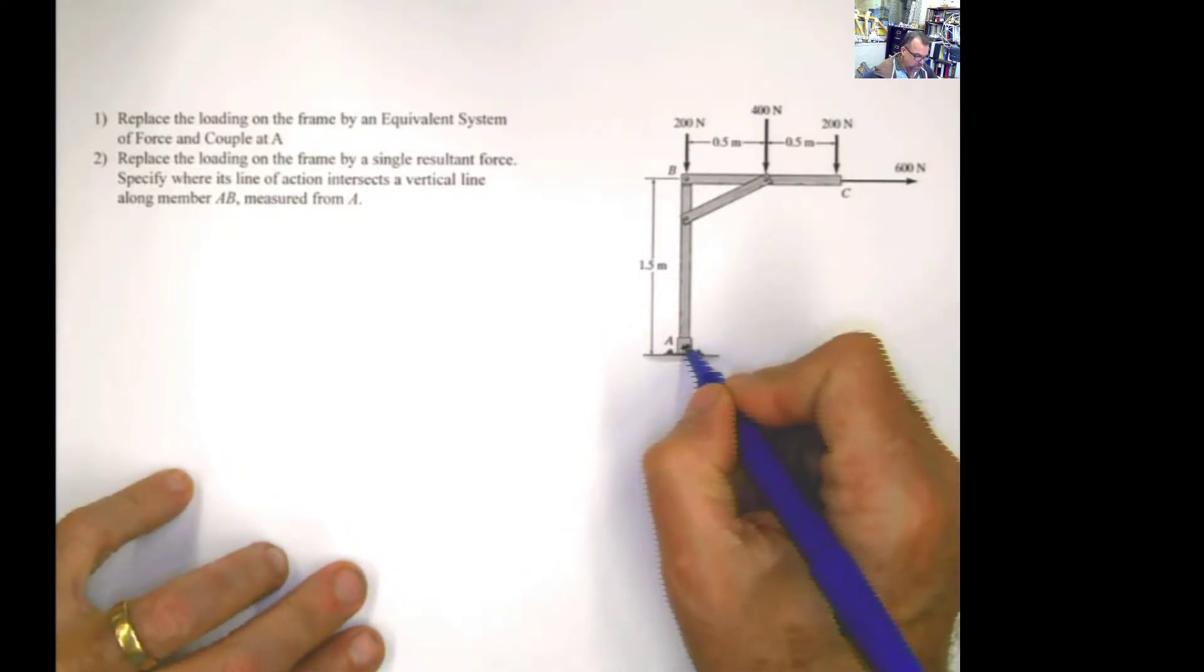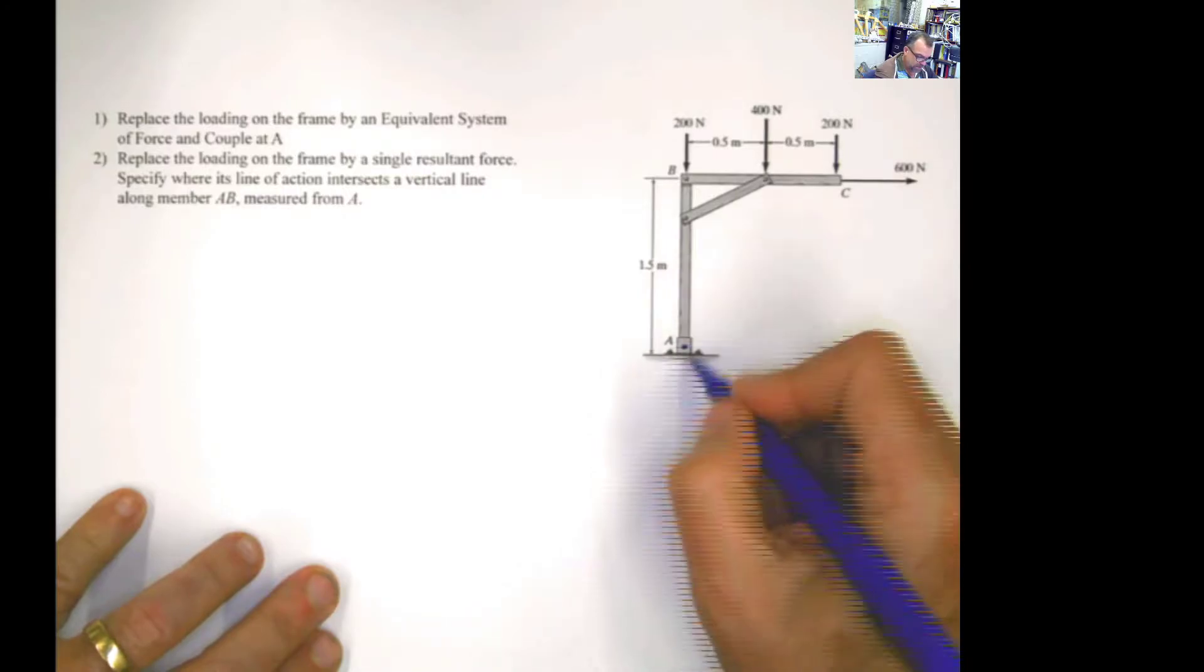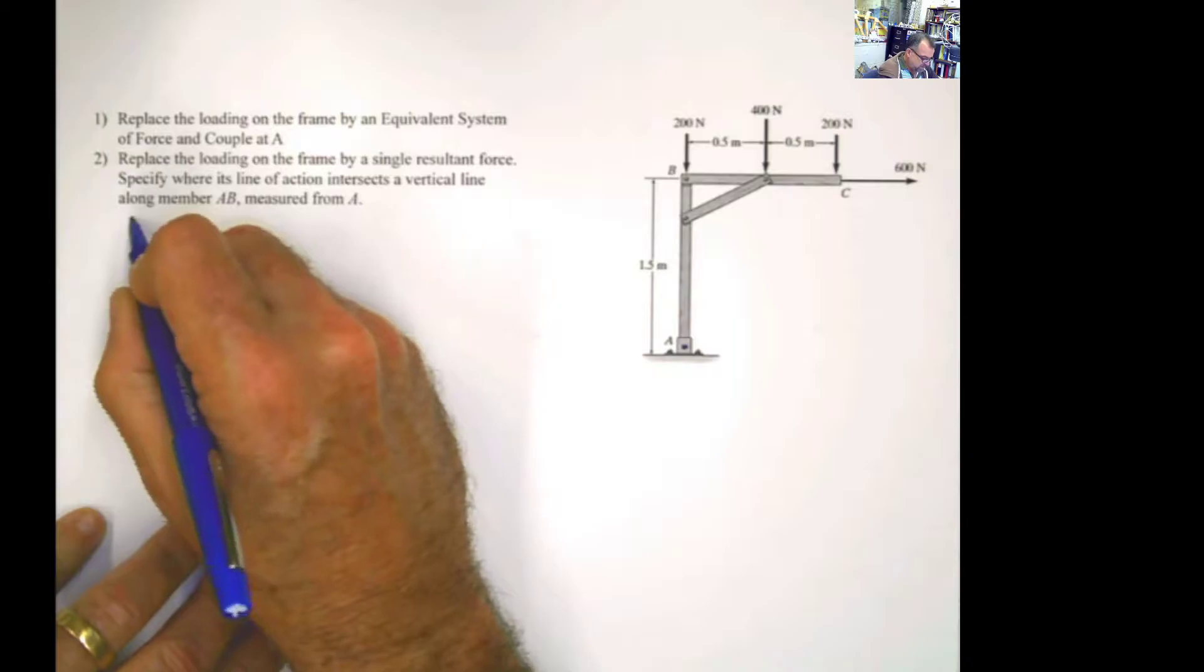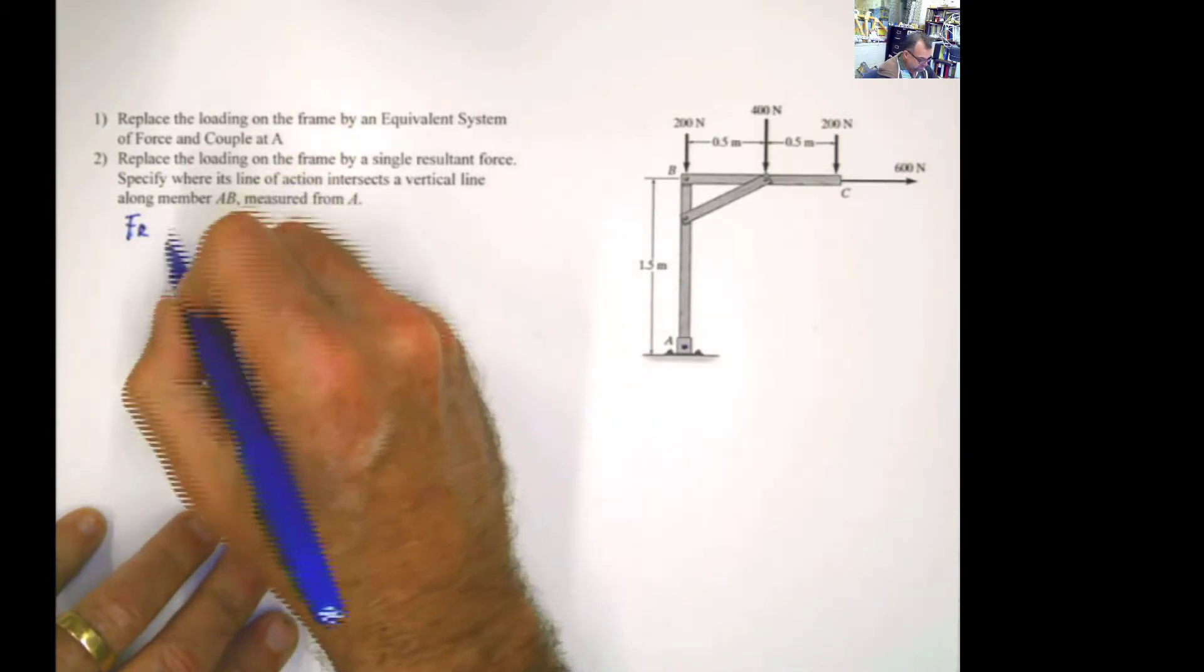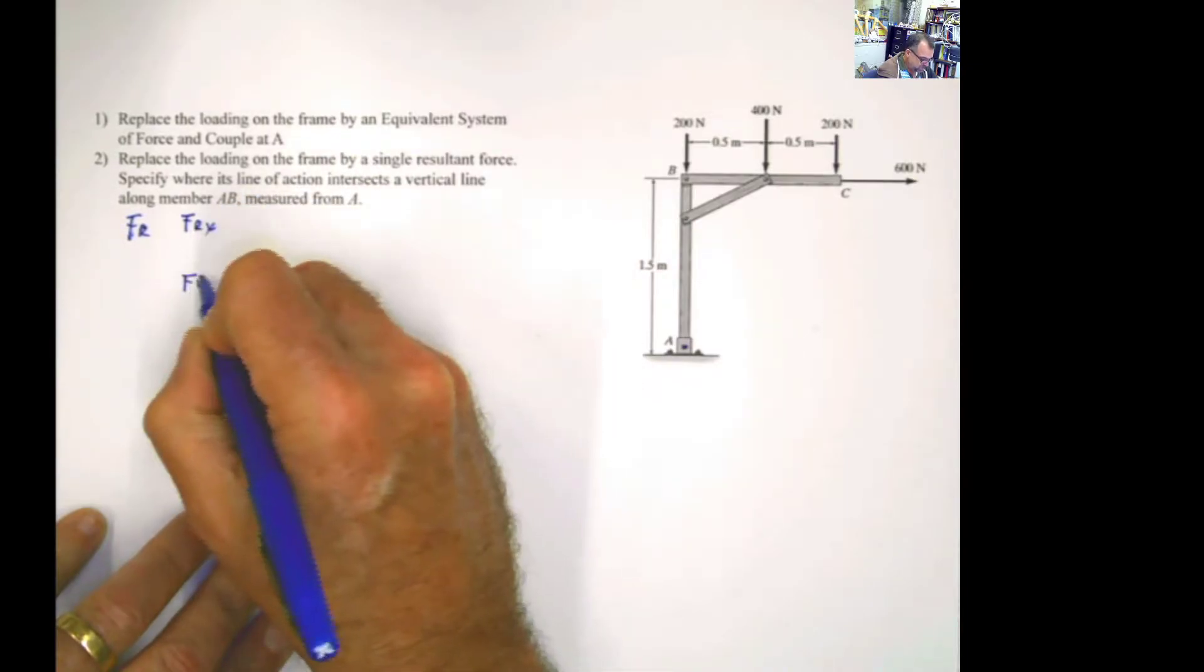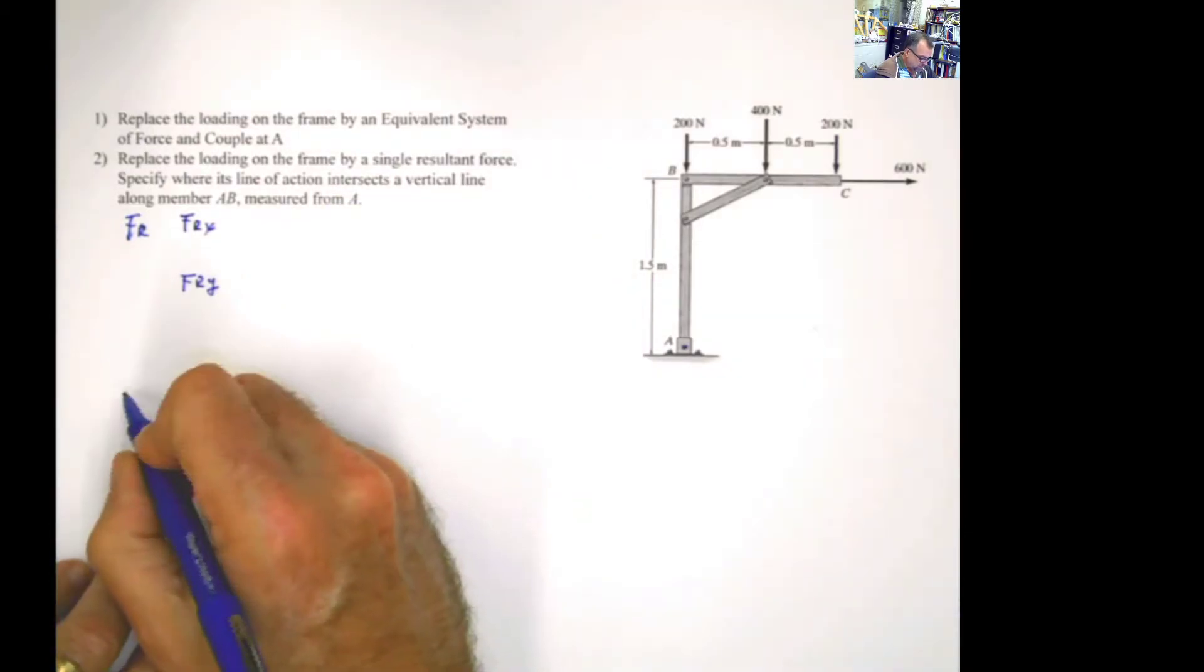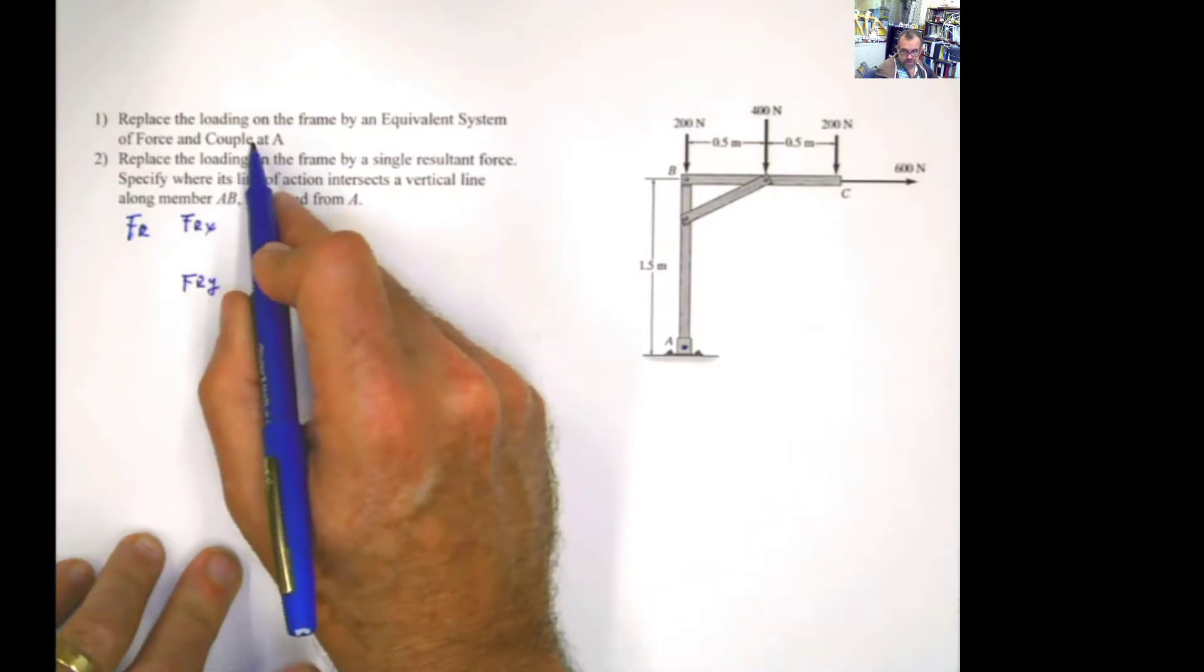If I want to substitute all of those forces by an equivalent force and moment at the point A, what you have to do is just finding the resultant force. And how do you find the resultant force? By finding the resultant force in x, by finding the resultant force in y. And once you have these two, then you have to find the couple, meaning the moment at the point A.